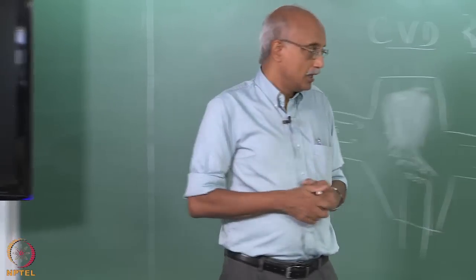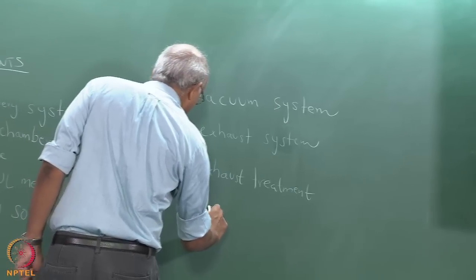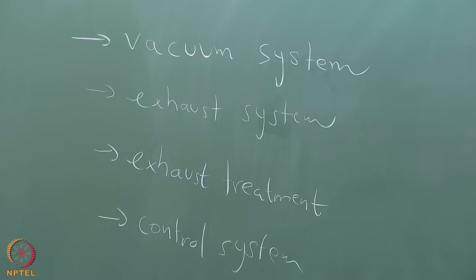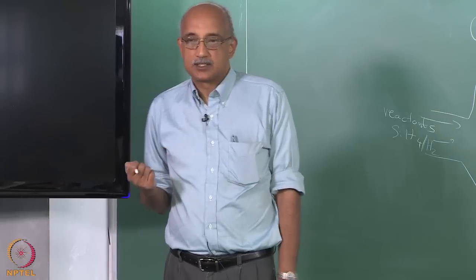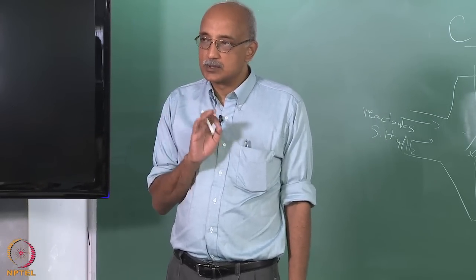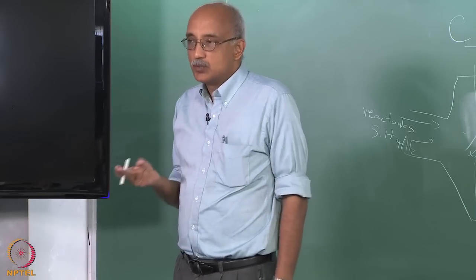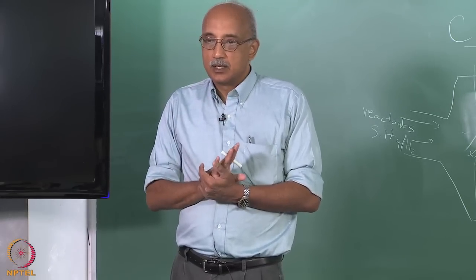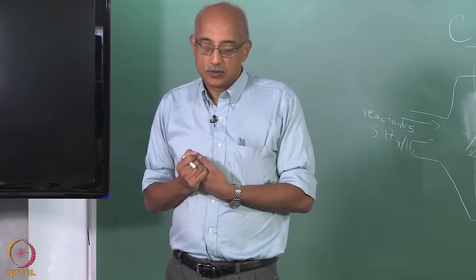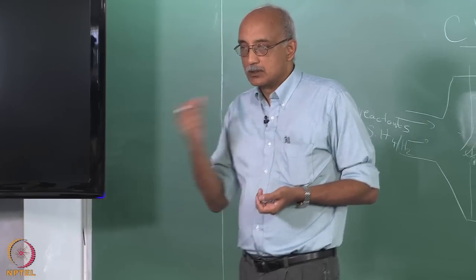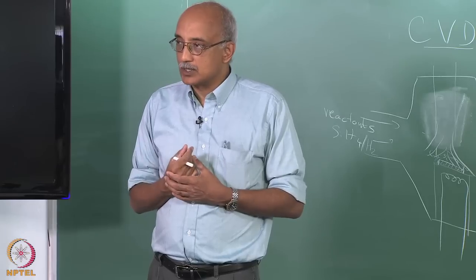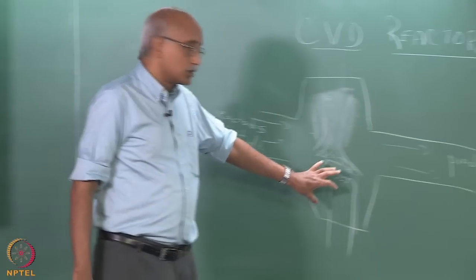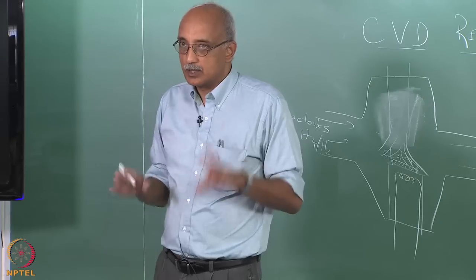You therefore have to provide appropriate exhaust treatment systems to ensure that when exhaust gases are released to the atmosphere, they don't have harmful consequences. That has to be built into the system. Finally, as with any chemical reactor, you need a good control system. In a CVD reactor, temperature is a very key variable requiring the tightest controls on the temperature distribution. The second most critical variable is the velocity distribution inside the reactor, because that delivers reactants to the substrate and exhausts byproducts. Pressure and reactant concentrations are also critical variables, and you need separate controls on substrate temperature versus reactor temperature.